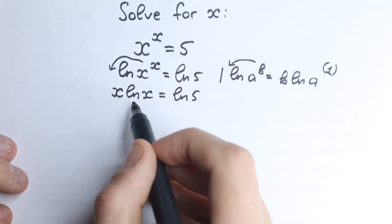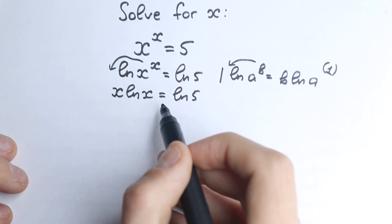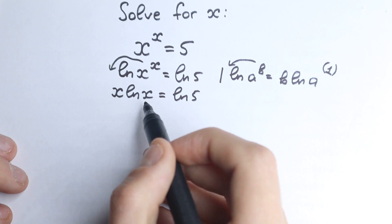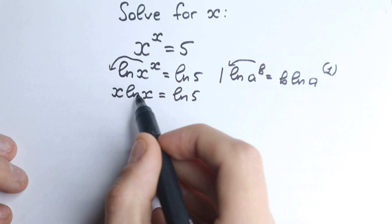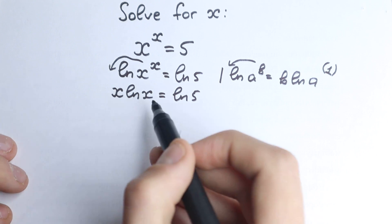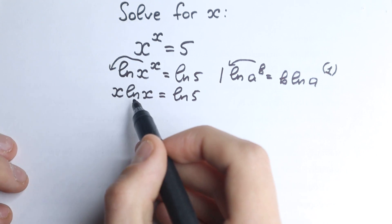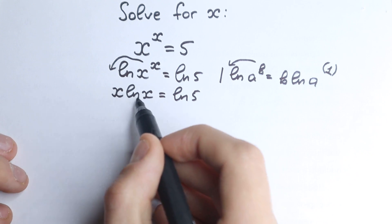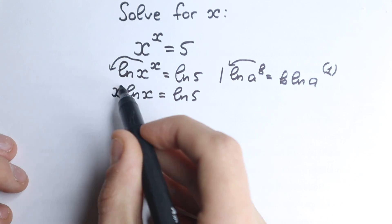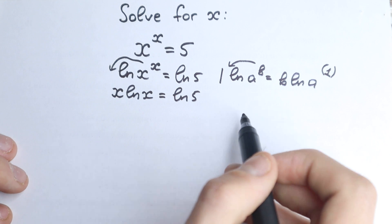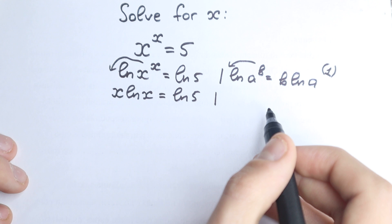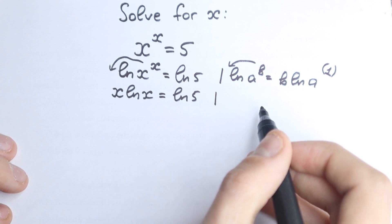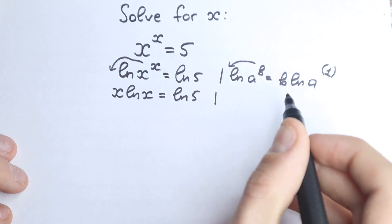In this line we have x times natural log x equal to natural log 5. We need to know about the Lambert W function — we cannot solve it in an easy way, because we have x here and x inside our natural log, which is difficult. A lot of students find difficulties with the Lambert W function, and I want you to understand this function quickly.